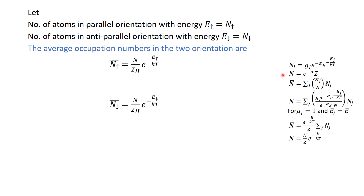The average occupation number is given by a relation where N_j / N is the probability of finding an electron in state j out of the total N electrons. For our case the system is non-degenerate, so g_j equals one, and there is only one energy level associated with each particular orientation, so we have a fixed energy E_j = E. Substituting this relation gives us the equation for the average occupation number.